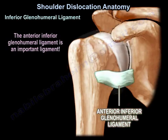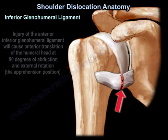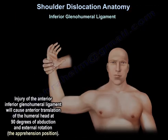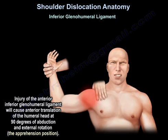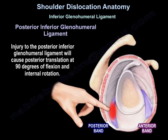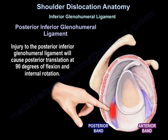How about the anterior inferior glenohumeral ligament? It is an important ligament. Its injury will cause anterior translation of the humeral head at 90 degrees of abduction and external rotation. In general, the glenohumeral ligament injury will cause posterior translation at 90 degrees flexion and internal rotation.